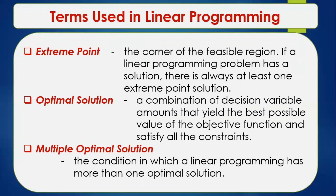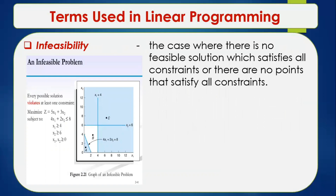An optimal solution is a combination of decision variable amounts that yield the best possible value of the objective function while satisfying all constraints. Multiple optimal solutions occur when a linear programming problem has more than one optimal solution. Infeasibility is the case where there is no feasible solution that satisfies all constraints — meaning no points satisfy all constraints simultaneously.